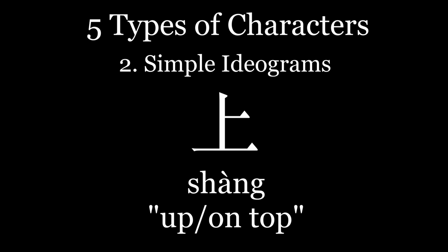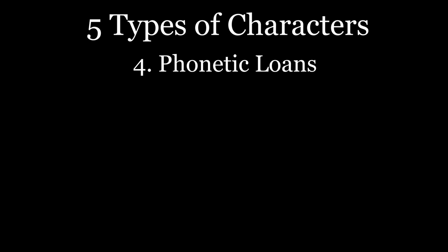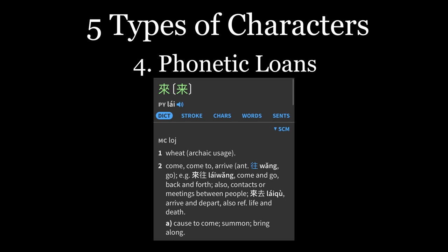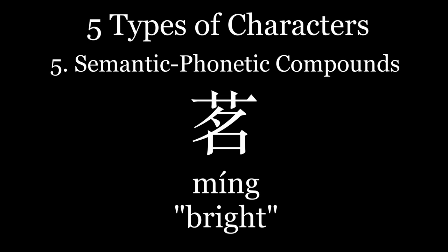The reason is that pictograms and ideograms represent only a fraction of all characters. There are five categories: pictograms, like the character for sun; simple ideograms, like the character for up; compound ideograms, like the character for bright, which combines sun and moon; phonetic loans, which borrow existing symbols to represent different words that sound the same, as wheat came to mean to come or to arrive; and finally, semantic phonetic compounds, wherein one part suggests a word's pronunciation and the other its meaning — like ming, meaning tea leaves, where the top component means grass while the bottom suggests its pronunciation as ming, meaning name.